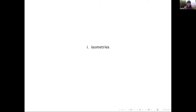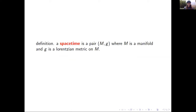Let's consider some preliminaries concerning isometries. I want to make sure that we all have a good idea of the definitions. Here's my definition of a spacetime: it's a pair (M, g) where M is a manifold and g is a Lorentzian metric. The usual background assumptions concerning the manifold are in place — it's smooth, it's Hausdorff, and so on.